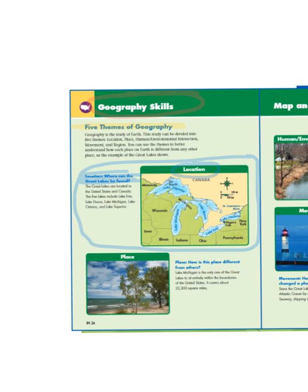First being location. If I wanted to learn a little bit about this theme of location, I would read the text below it. It says: location — where can the Great Lakes be found? So location is all about finding where something is on a map. The Great Lakes are located in the United States and Canada. The five lakes include Lake Erie, Lake Huron, Lake Michigan, Lake Ontario, and Lake Superior. So I would read the text,